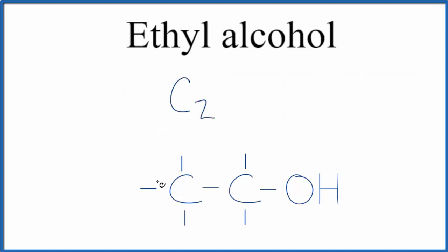So C2. We have one, two, three, four, five hydrogens. So we're going to call that H5. And then we'll put our OH group on the end. So the chemical formula for ethyl alcohol is C2H5OH.